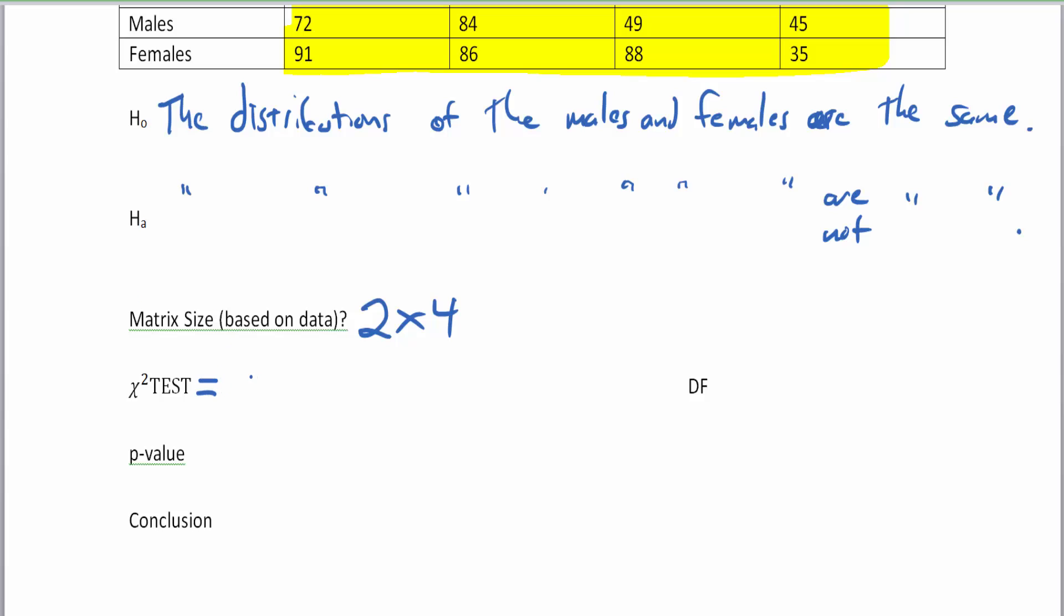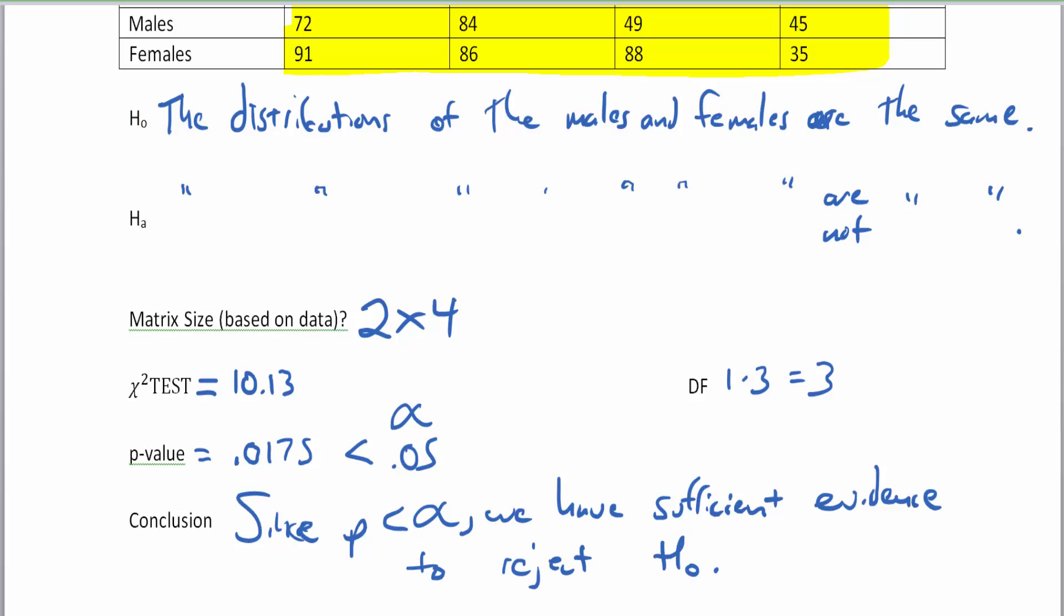Let's write down this information and make our conclusion. Our chi-squared test is 10.13. Our degrees of freedom is 1 times 3, which is 3, from rows minus 1 times columns minus 1. Our p-value was 0.0175, which is less than our alpha, 0.05. Since the p-value is less than alpha, we have sufficient evidence to reject the null hypothesis. This data represents a very rare situation, so they can't possibly be the same.